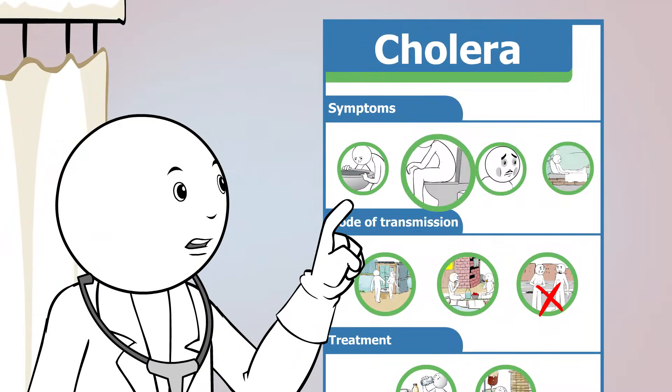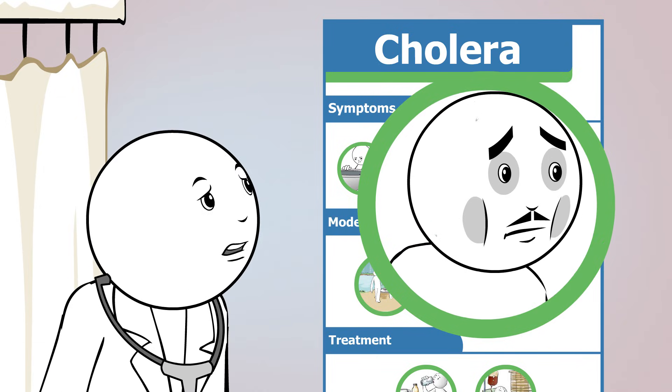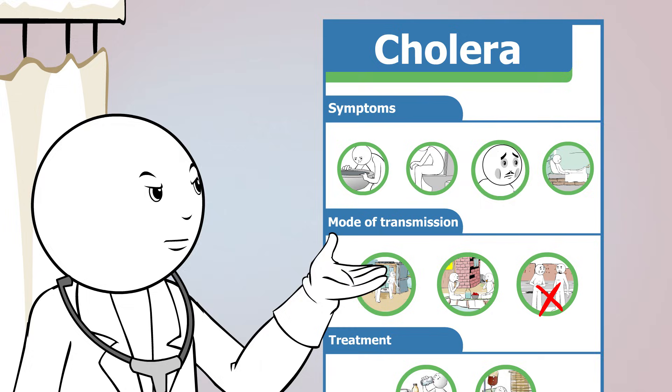Profuse vomiting, watery diarrhea and sunken eyes are typical symptoms of cholera. We have seen a number of cases of cholera in this area recently.